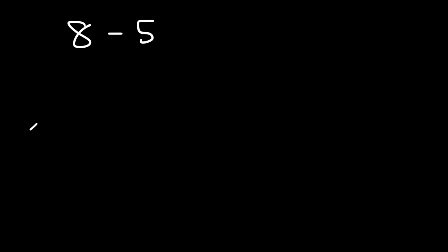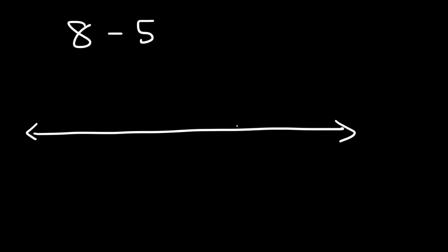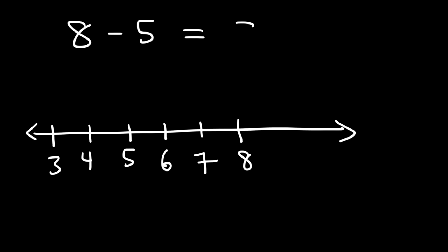Here's another simple example: 8 minus 5. So if we start with 8, we need to travel 5 units to the left in order to get the answer. So this is 7, 6, 5, 4, 3. So 8 minus 5 is 3. And that's a simple way in which you could subtract one number by another number.